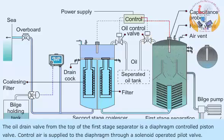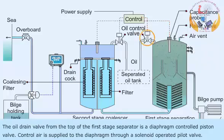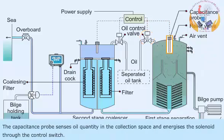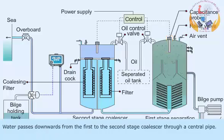The oil drain valve from the top of the first stage separator is a diaphragm-controlled piston valve. Control air is supplied to the diaphragm through a solenoid-operated pilot valve. The capacitance probe senses oil quantity in the collection space and energizes the solenoid through the control switch.